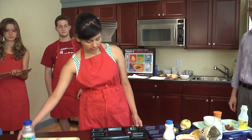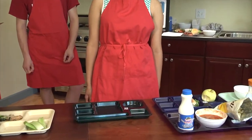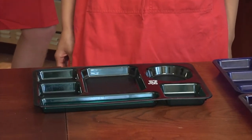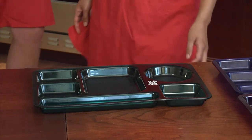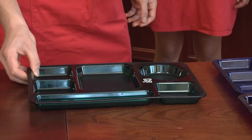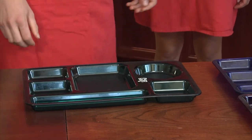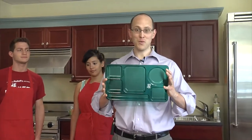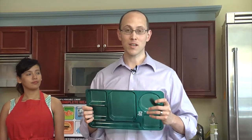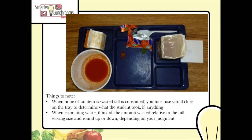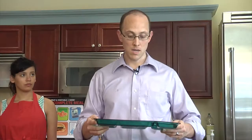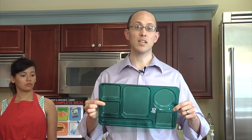For the second tray, I can't really tell what was on it or what was taken from it, because there's no traces, no crumbs, no smears. So I would say N/A — not applicable. There's no traces of any foods, no crumbs, so it's N/A. But why do we still use this tray? Because a student actually came through and took a meal, so it's important that we record that in the data. We just can't tell what the student took.